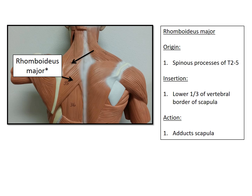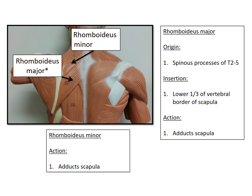Just superior to the rhomboideus major is the rhomboideus minor, and the action for this muscle is to also adduct the scapula. If you imagine you're at the gym doing seated rows, as you pull back on the machine, you will be using your rhomboideus major and minor to adduct your scapula — to draw that scapula towards the midline.